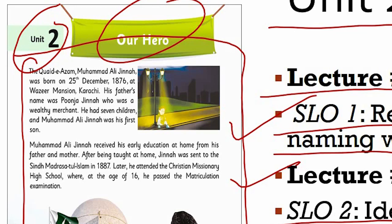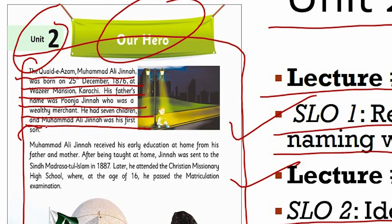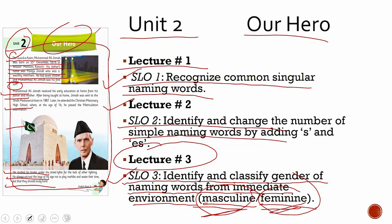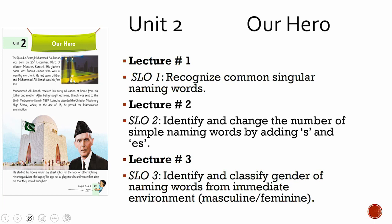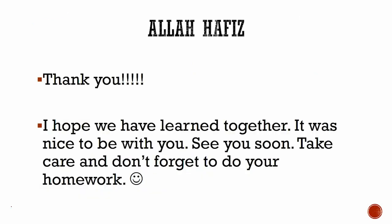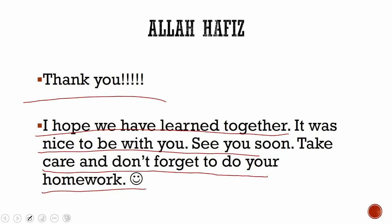For example, while reading the paragraph I can find the word son — it's a masculine word used for boys. Read page number 9 further and try to find and circle words that are either masculine or feminine. See how many masculine and feminine words you can find. Thank you very much — I hope we have learned together. It was nice to be with you. See you soon, take care, and don't forget to do your homework. Allah Hafiz.